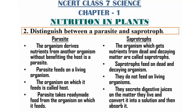Moving on to the second question: distinguish between a parasite and a saprotroph. Parasite: the organism that derives nutrients from another organism without benefiting the host is a parasite. A parasite feeds on a living organism. The organism on which it feeds is called the host. A parasite takes ready-made food from the organism on which it feeds.